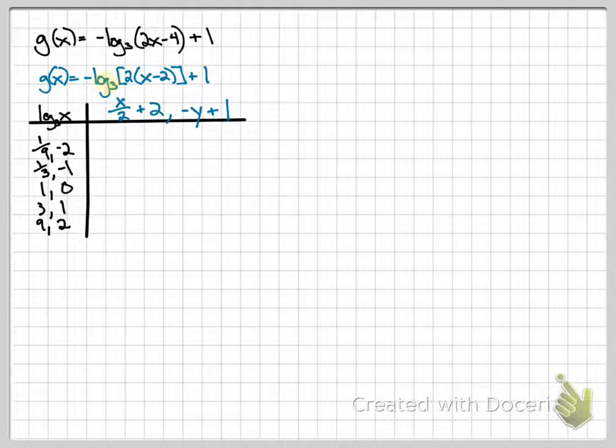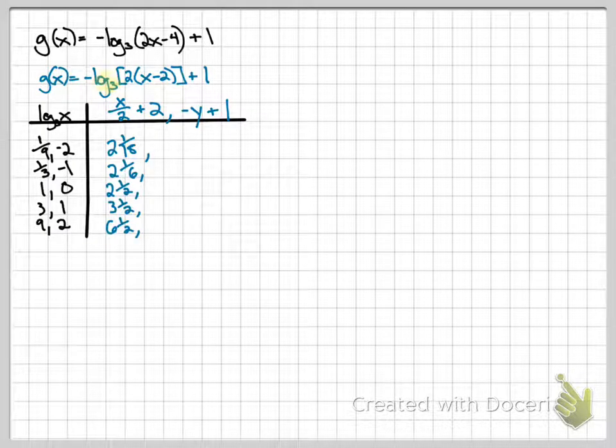So when it's 1 ninth and I divide it by 2 now it's 1 eighteenth plus 2 is 2 and 1 eighteenth. 1 third divided by 2 is 1 sixth plus 2, 2 and 1 sixth. See if you can finish the x's. Pause the video. Okay, check your x values. Now go through and do your y values. Pause the video again.